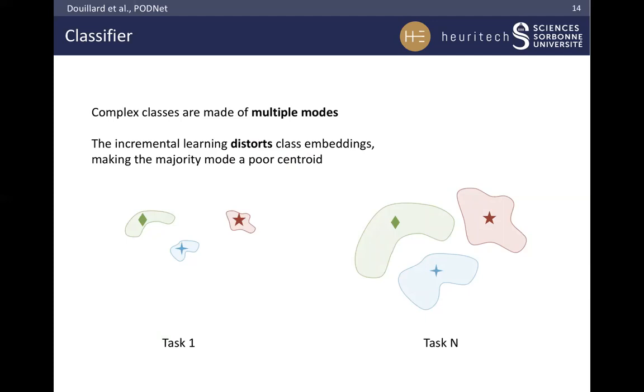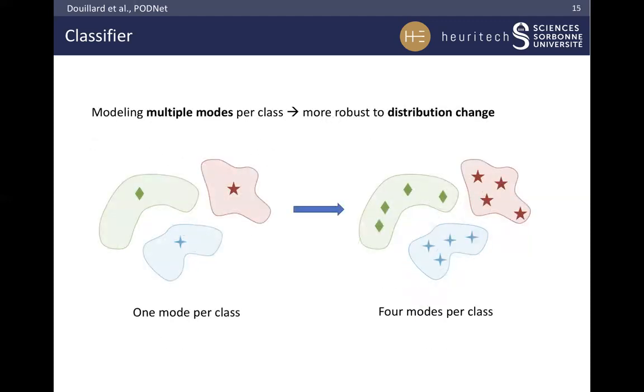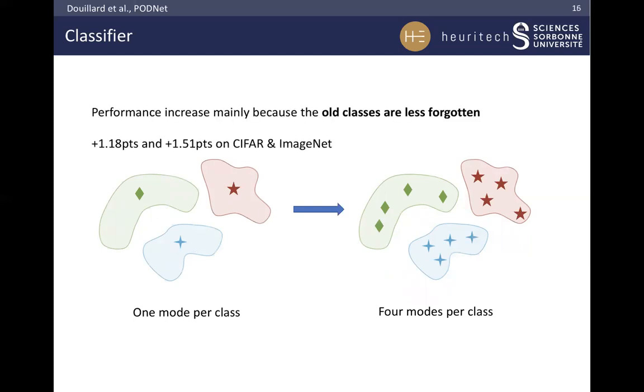During the incremental learning, the dataset distribution changes greatly. In this situation, the majority modes become poor centroids, as they cannot represent correctly the change in each class embeddings. We propose to use multiple modes per class. This results in a classifier that is much more robust to distribution change. In practice, we will set for all experiments and all datasets the number of modes per class to 10. We found that using multiple modes per class increased performance. This performance was not simply due to better overall accuracy, but rather to reduced forgetting. New classes aren't learned necessarily better, but the old classes do not forget catastrophically. Because our model is much more robust to the distribution change, the old class embedding can change a lot, with little forgetting.